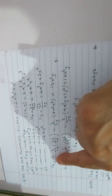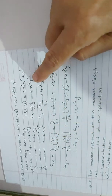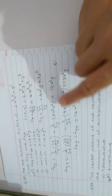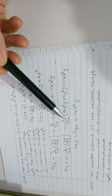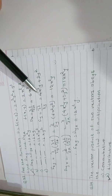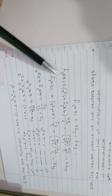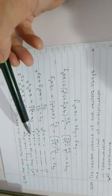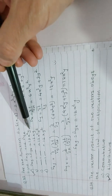Now find f_xy: take ∂/∂y of f_x = 6x²y², giving 12x²y. Similarly, f_yx: take ∂/∂x of f_y = 4x³y + 3y², giving 12x²y. Since both are equal, f_xy = f_yx = 12x²y. The correct answer is 12x²y — be careful when selecting among close options.